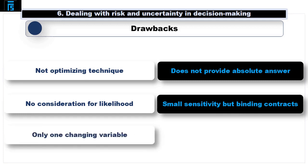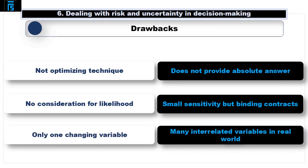It also only looks at one variable changing at a time. This is clearly unrealistic. In the real world, variables are interrelated and tend to change all at the same time. There's a technique that can help us here, though. It's called simulation.